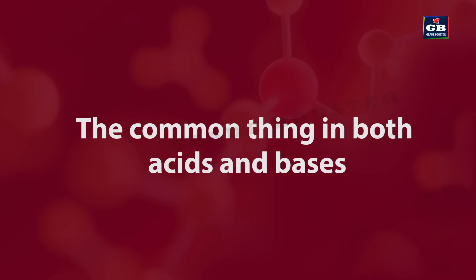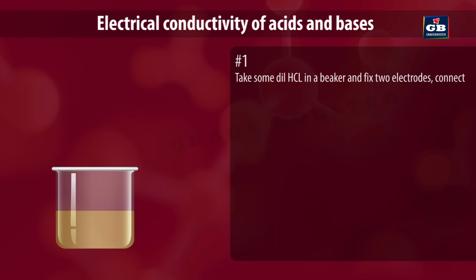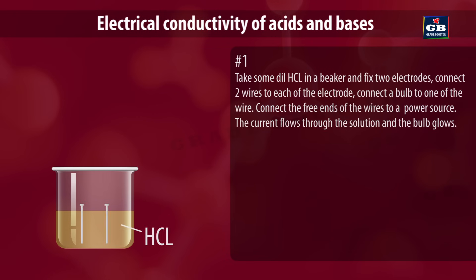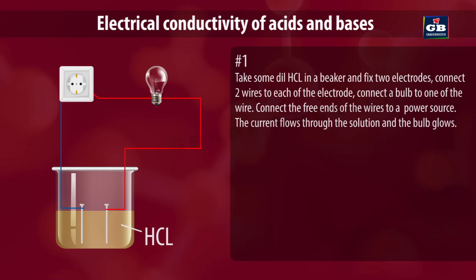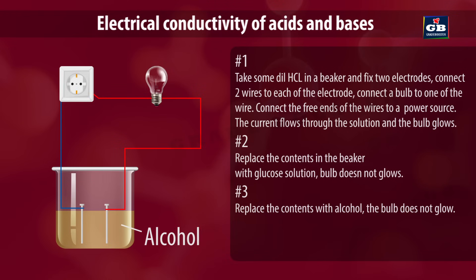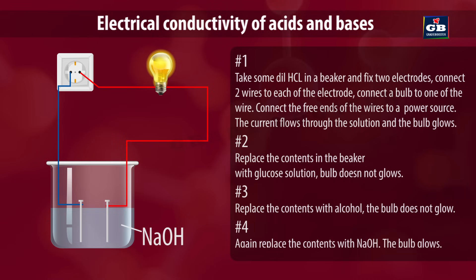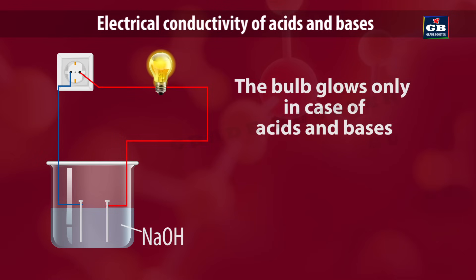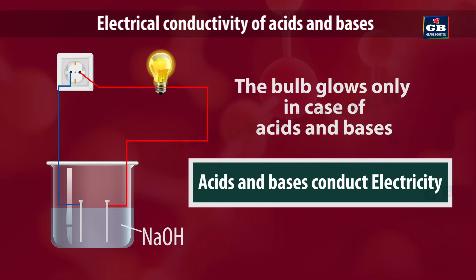The common thing in both acids and bases. Take some dilute HCl in a beaker and fix two electrodes. Connect one bulb and connect the free ends of the wires to a power source. The current flows through the solution and the bulb glows. Replace the contents with glucose solution — the bulb does not glow. Replace with alcohol — the bulb does not glow. Replace with sodium hydroxide — the bulb glows. This shows that the bulb glows only in case of acids and bases, meaning acids and bases conduct electricity.